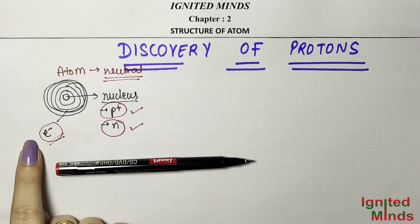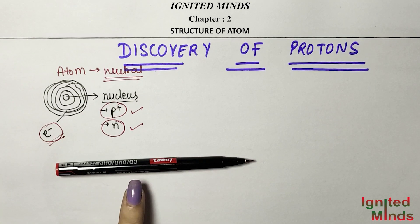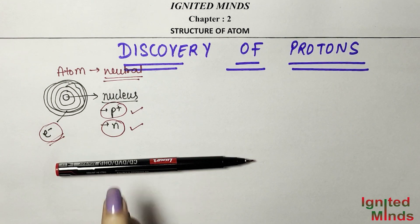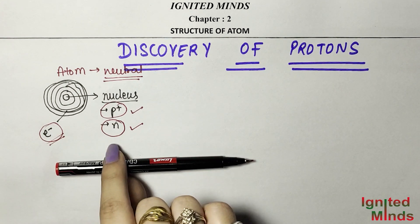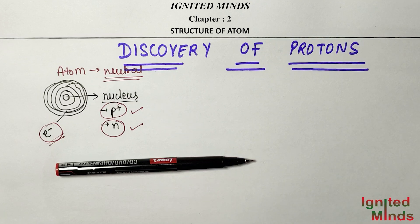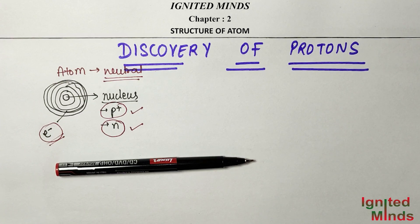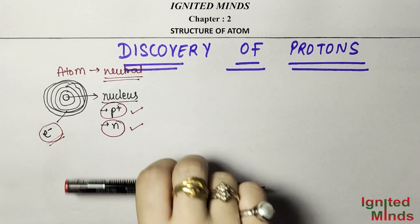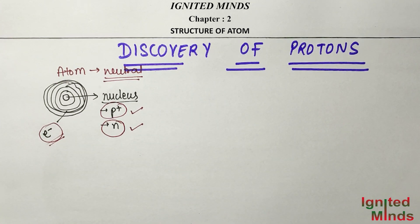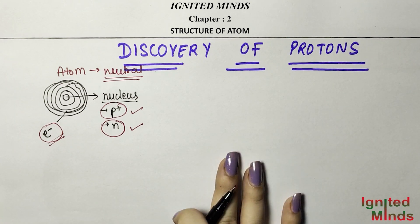Scientists had discovered only negative particles, so they concluded there must definitely be a positive particle present as well. That's why when you touch something, the charges cancel out and you feel no current — the atom is neutral.